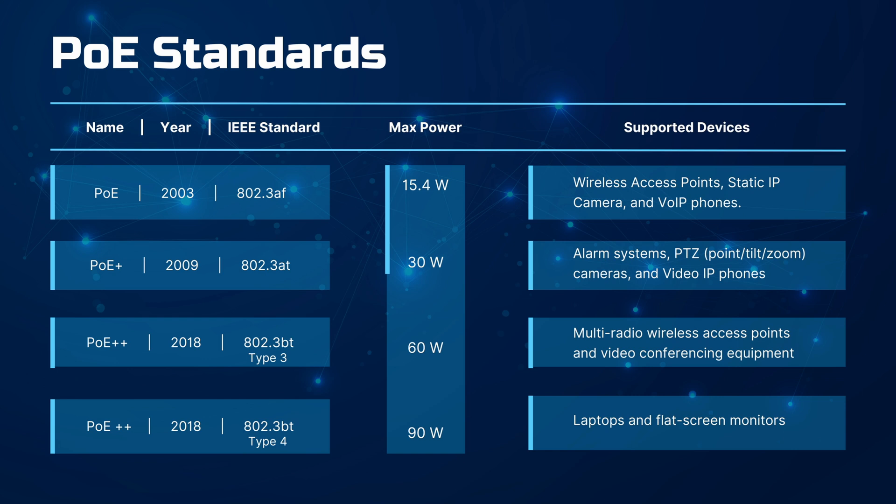Power over Ethernet standards define the technical specifications for delivering electrical power along with data over ethernet cables. Key standards include IEEE 802.3af, which delivers up to 15.4 watts per port supporting access points and static cameras; IEEE 802.3at, which delivers up to 30 watts per port supporting alarm systems and pan-tilt-zoom cameras; and IEEE 802.3bt, also known as PoE++, which delivers up to 90 watts per port supporting video conferencing equipment, laptops, and flat panel displays. Ensure compatibility when setting up a PoE network.